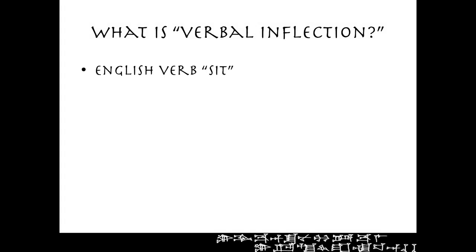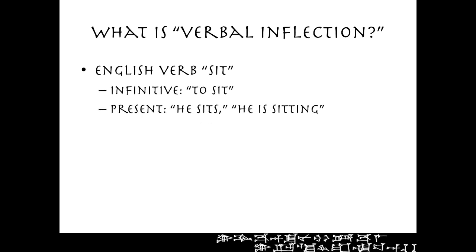I wanted to give another example because this is going to come up in Sumerian. Take the English verb 'sit.' We have 'to sit,' 'he sits,' 'he is sitting' — all the same. But in the past: 'he sat.' So the verb changes internally — it changes the actual form of the verbal base for the past tense. We get this in a lot of English verbs: run/ran, fall/fell. So this is not uncommon to us.